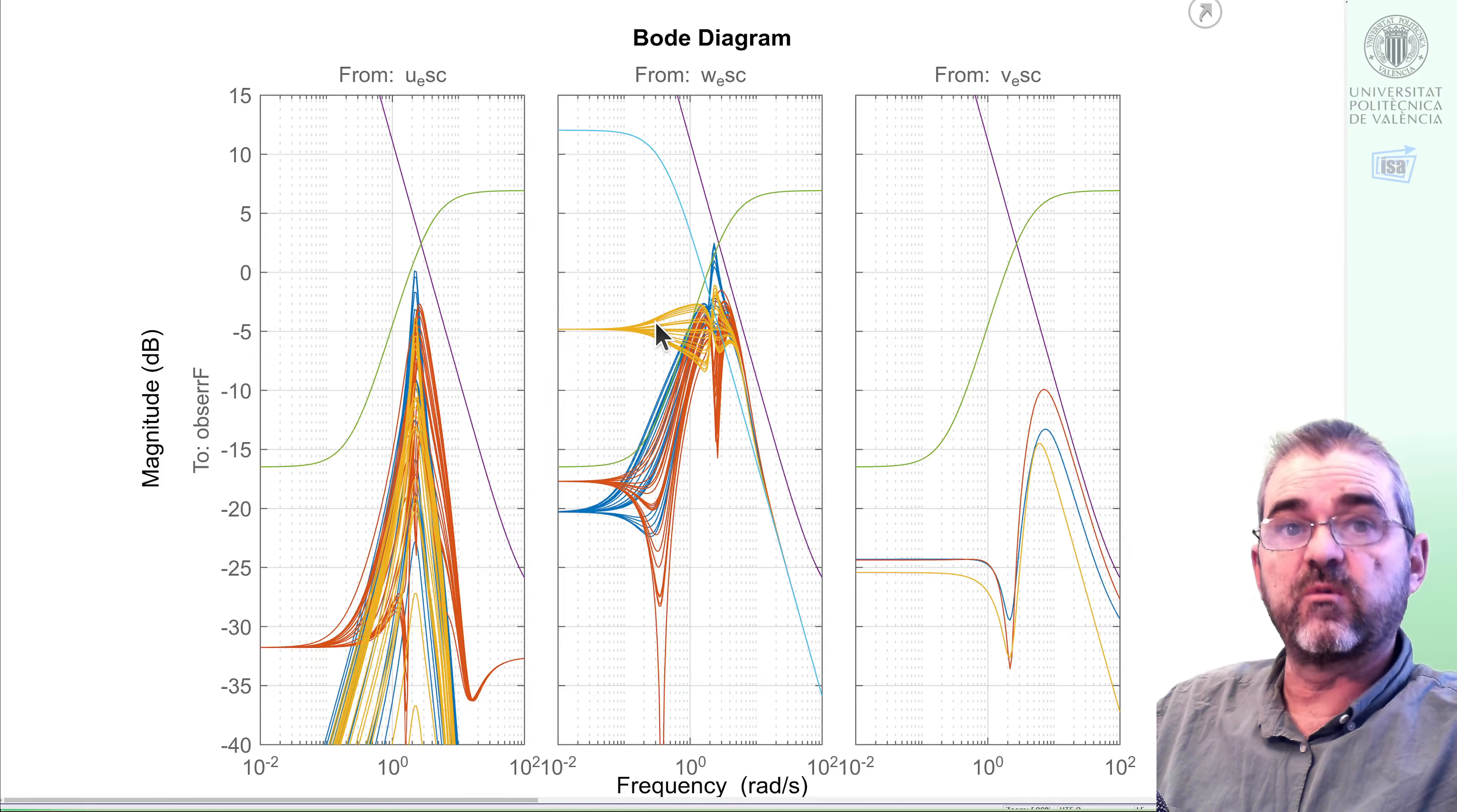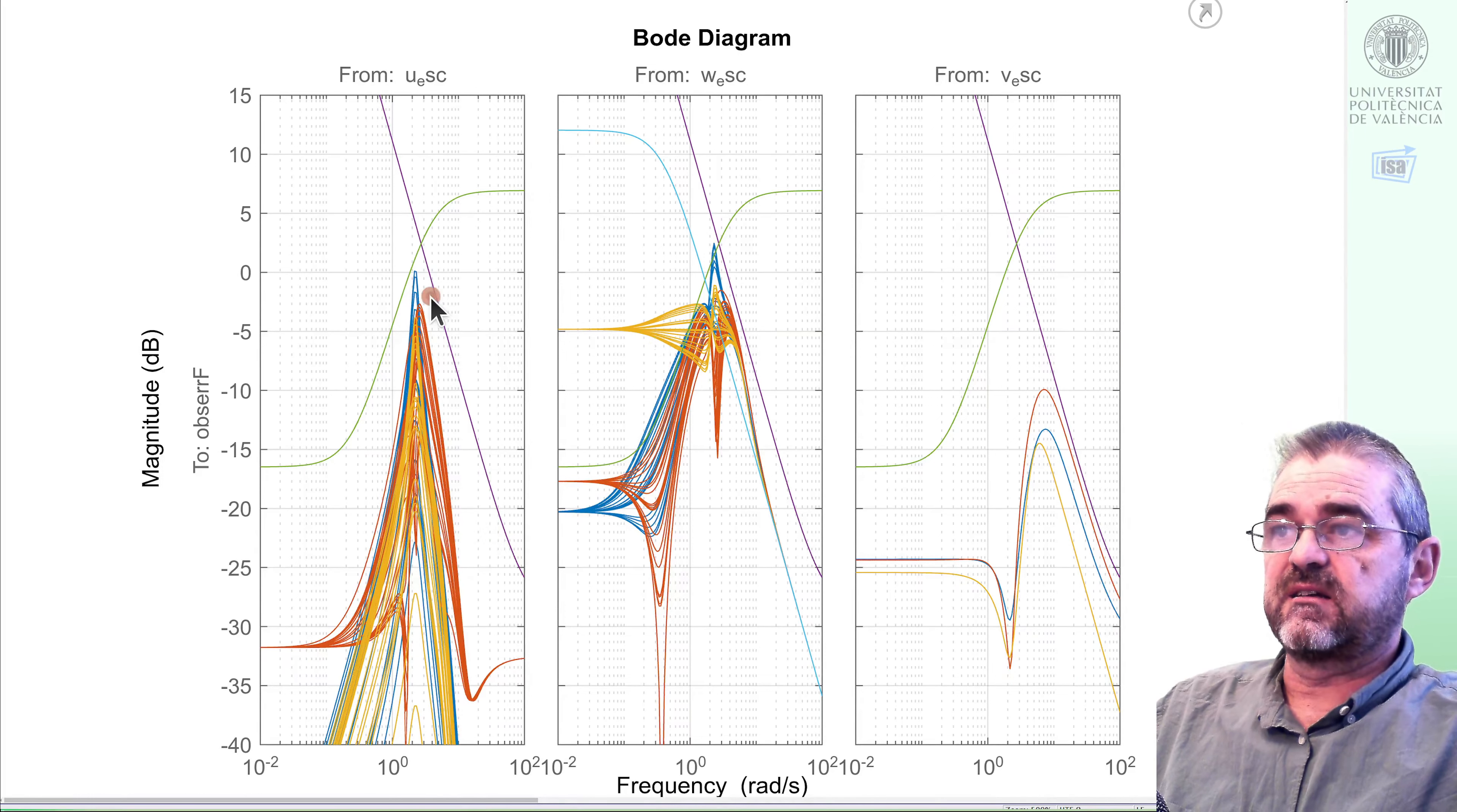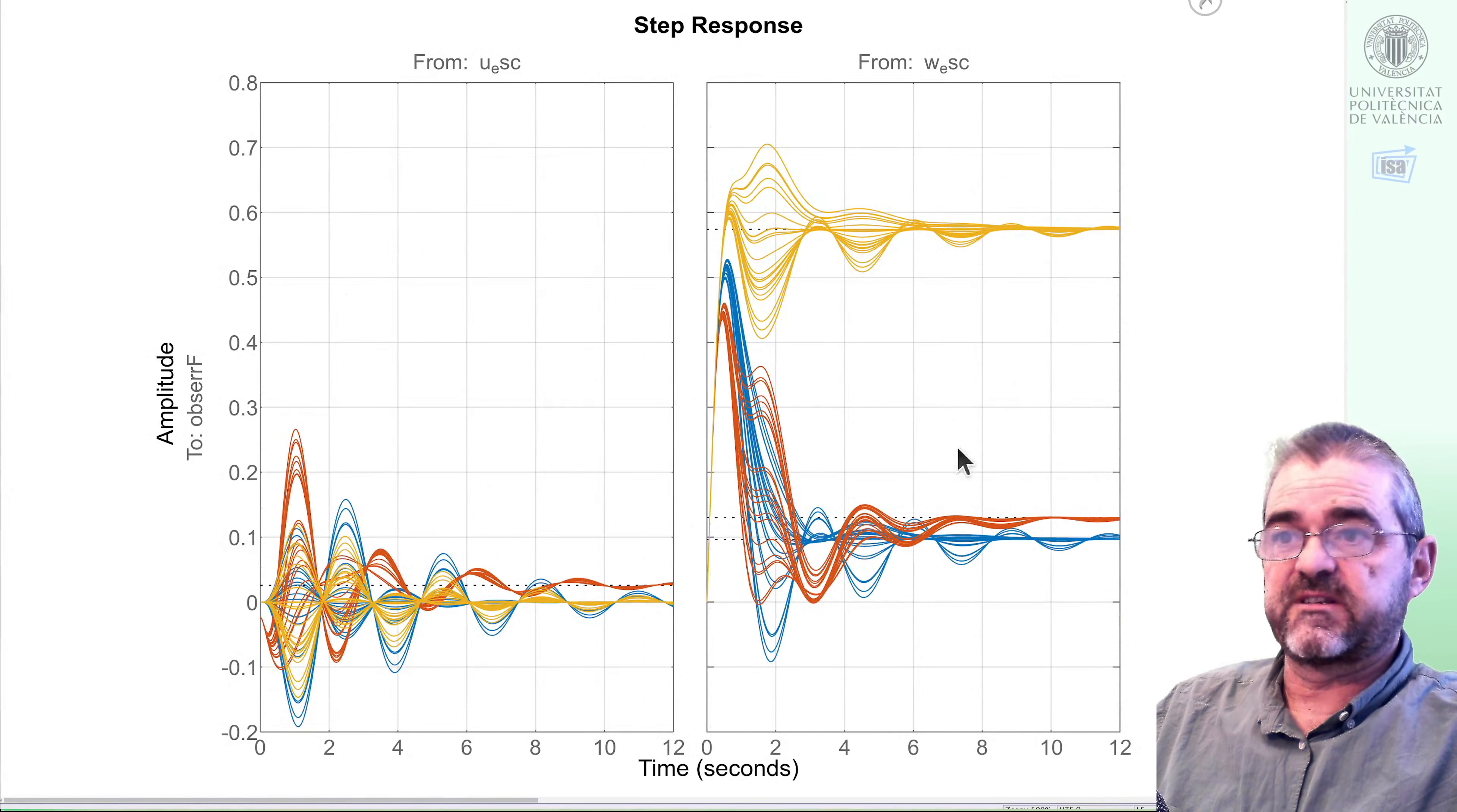We have here a low frequency behavior in which the observation error is smaller for H infinity, small enough but a bit larger for mu synthesis, and very large for H2 because we did not provide the green template frequency weight to the H2 design. Of course, you can download the code and play with it at will. And we saw these peaks at around two radians per second arising from this oscillatory response.